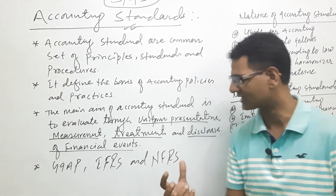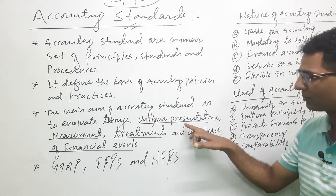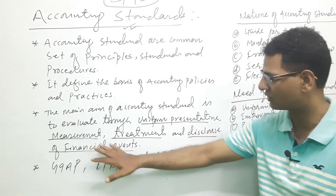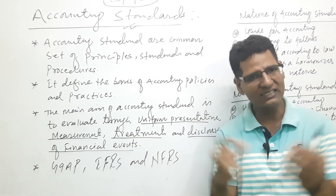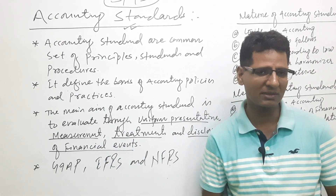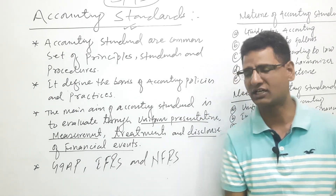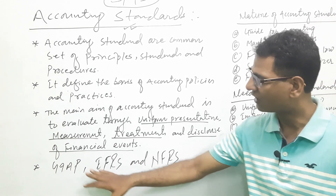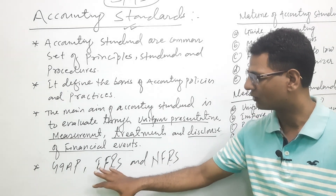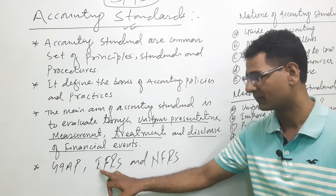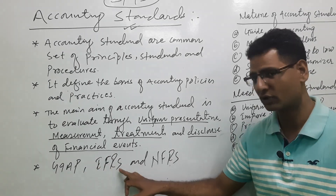On the basis of their own set, different internationally accepted accounting principles are followed. This ensures uniform presentation, uniform measurement, and proper management. Basically in Europe and in Asia, IFRS — International Financial Reporting Standard — is followed.